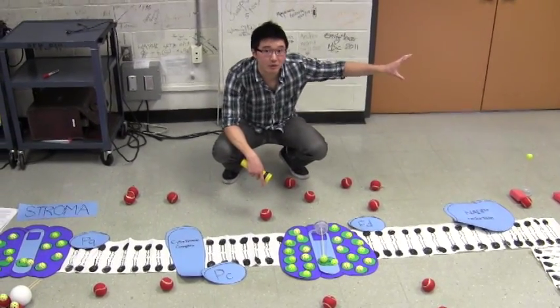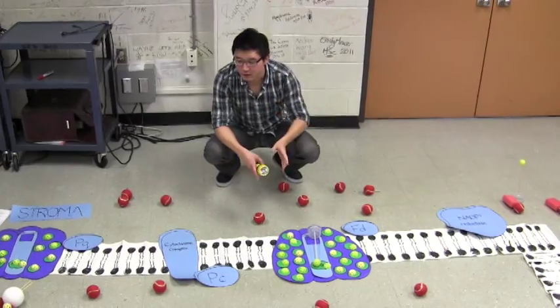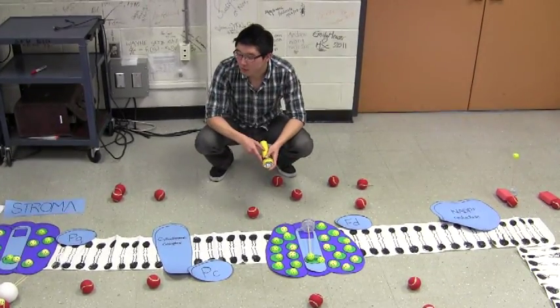So that electron carrier then takes that high-energy electron away from these proteins and uses it up to make glucose. Those high-energy electrons end up in the glucose,